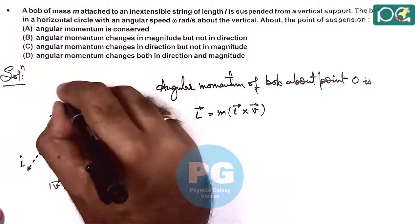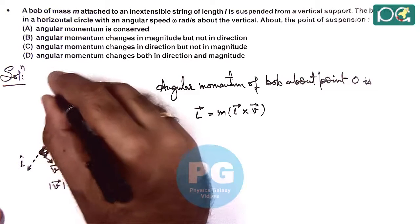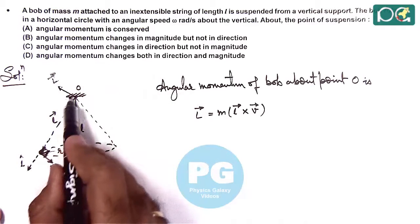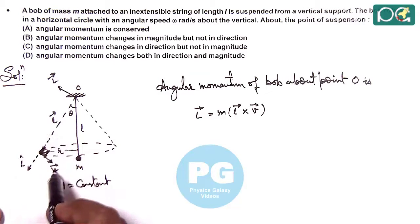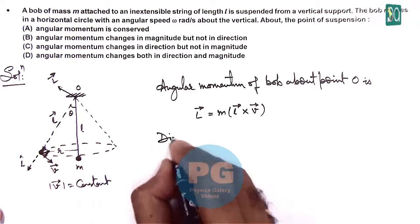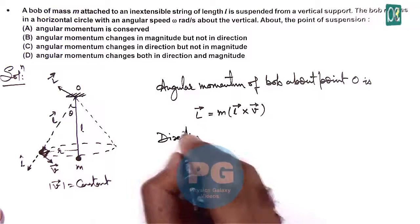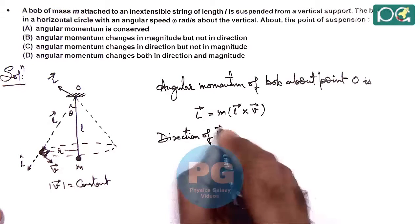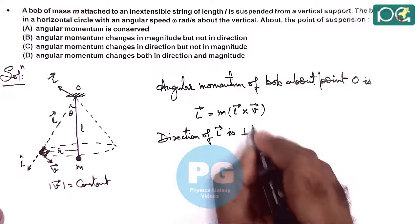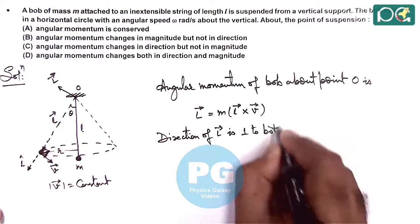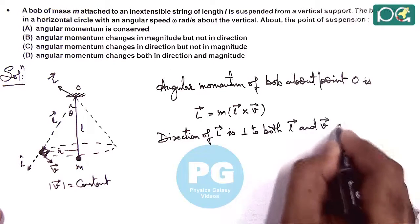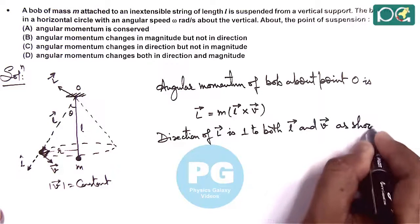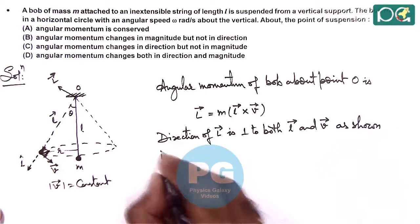The L vector is in a plane perpendicular to the plane containing L vector and velocity vector. So we can write the direction of L vector is perpendicular to both L vector and velocity vector, as shown in the figure.